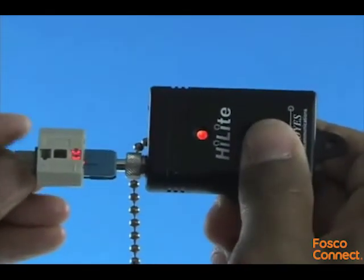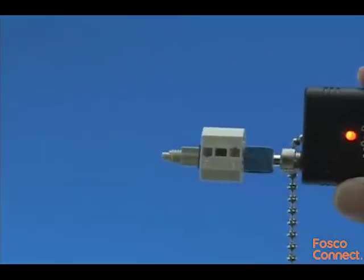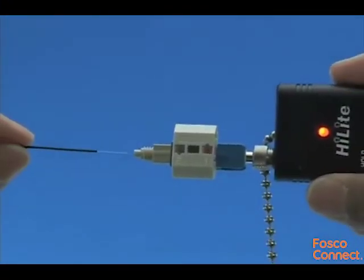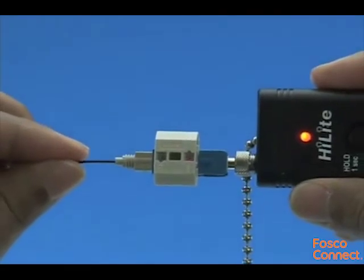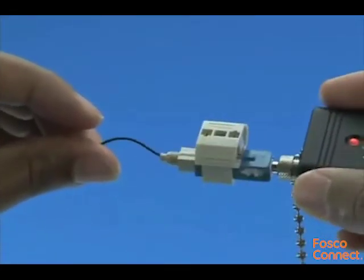There will be a red glow in position 1 of the wedge clip. Insert the cleaved fiber into the rear of the connector until the red glow dims. Make a bend in the fiber to maintain connection.